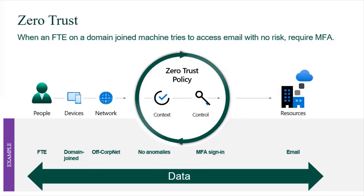I definitely agree with what Chase said about this looking too complex for some companies — you need to take all this data and build policies around it. You can start with something simple like that. But I do think you can take it to the next level and actually leverage all this data without the complexity of building policies manually, by using adaptive risk-based policies. You need a solution that can look at all this data, correlate it, and make real-time decisions to make it simpler for the company using it.